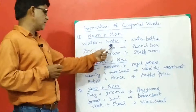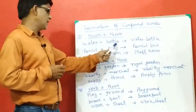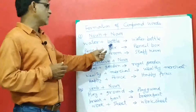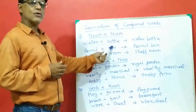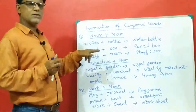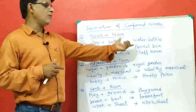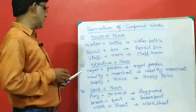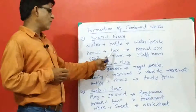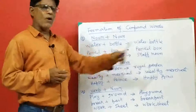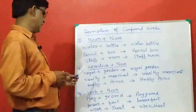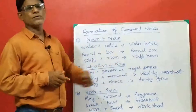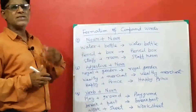Number one: noun plus noun — when two nouns are joined to form a new compound word. For example, water plus bottle gives water bottle; water is a noun and bottle is also a noun. Similarly, pencil plus box gives pencil box, and staff plus room gives staff room.